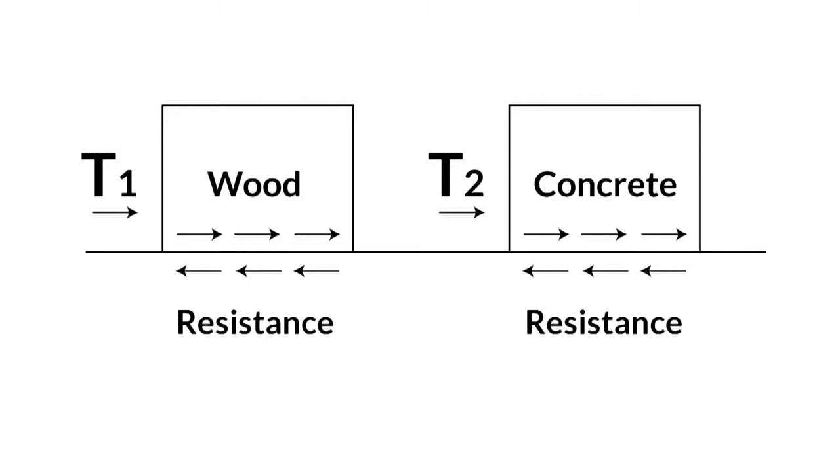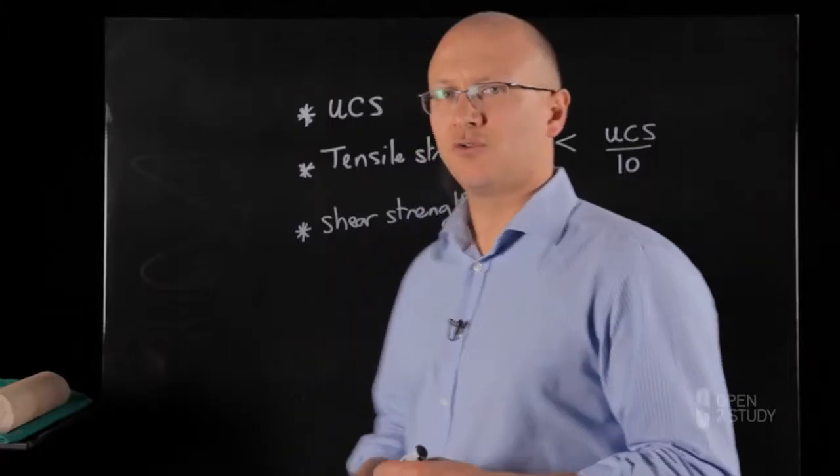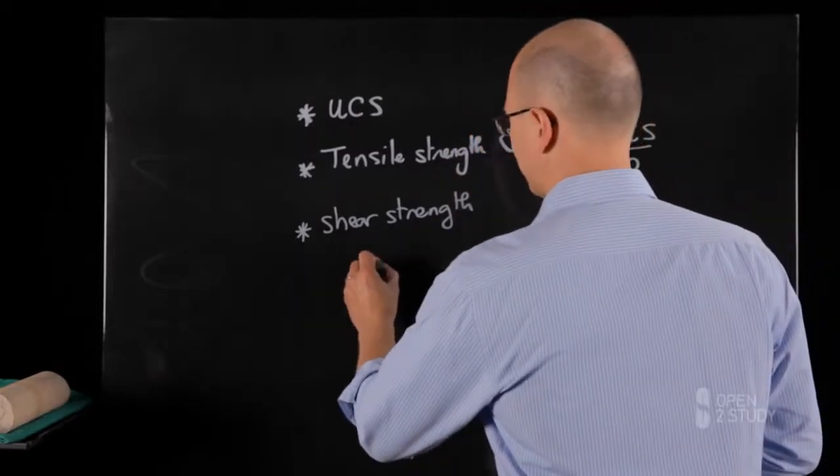So that shows that to some extent the sliding resistance or the resistance offered by the surface depends very much on the amount of compressive stress applied perpendicular to the sliding direction. So the shear strength is not unique.